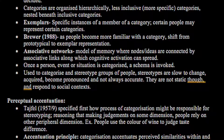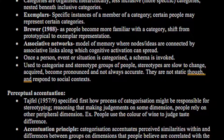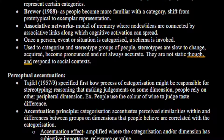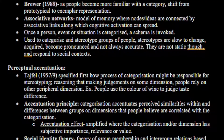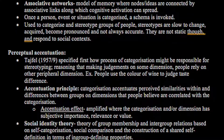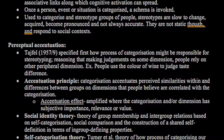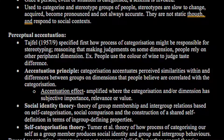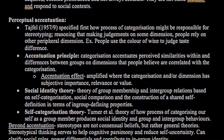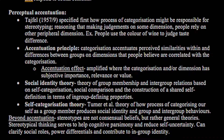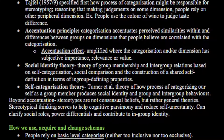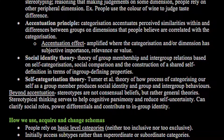Perceptual accentuation, proposed by Tajfel in 1957 and 1959, specified how processes of categorisation might be responsible for stereotyping — that in making judgements on some dimension, people rely on other peripheral dimensions. For example, people use the colour of wine to judge taste differences, using things completely irrelevant to judge something else. The Accentuation Principle states that categorising accentuates perceived similarities within and differences between groups on dimensions believed to be correlated with categorisation. The Accentuation Effect amplifies this where the categorisation has subjective importance or value. Social Identity Theory is related, being a theory of group membership and intergroup relations based on self-categorisation and social comparison. Self-categorisation Theory, proposed by Turner et al., explains how categorising oneself as a group member produces social identity and intergroup behaviours.